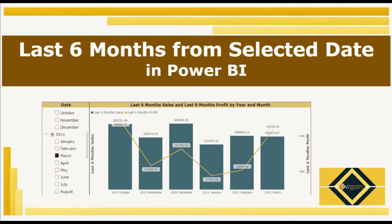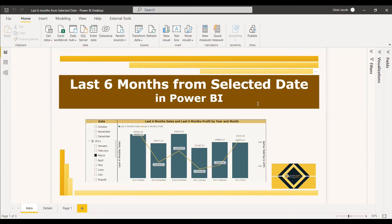Welcome to this new video. In this video, we will see how to get the last six months from the selected date in Power BI. Usually we used to get the last six months or three months in a card visual by using a measure, which will not be able to satisfy our need in a column chart or line chart. In this video, we will do the last six months with respect to the stacked column chart or the combo chart.